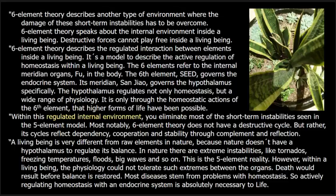A living being is very different from raw elements in nature, because nature doesn't have a hypothalamus to regulate its balance. In nature, there are extreme instabilities like tornadoes, freezing temperatures, floods, big waves, and so on, that just happen freely — this is the five-element reality. However, within a living being, the physiology could not tolerate such extremes between the organs; death would result before balance is restored. Life would never have been able to get a foothold on this earth without internally regulating physiology. Most diseases stem from problems with homeostasis, so actively regulating homeostasis with an endocrine system is absolutely necessary to life.